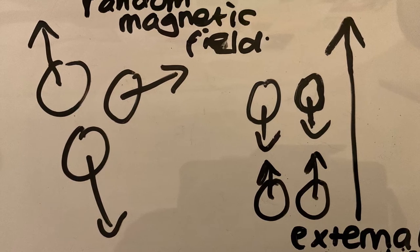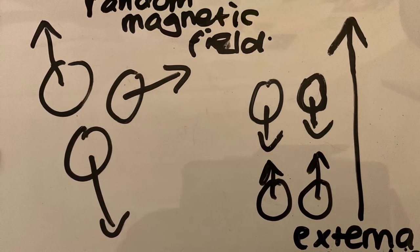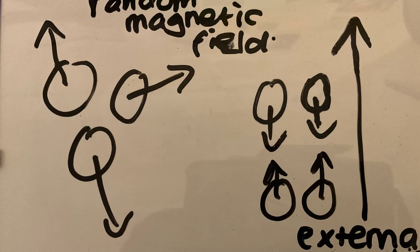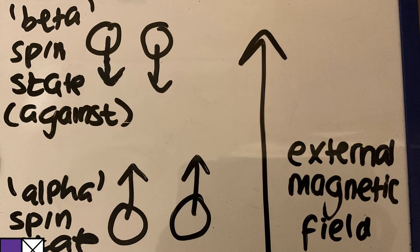when they are placed in an external magnetic field, the magnetic field of the nuclei either align with or against this new magnetic field. When aligned is known as